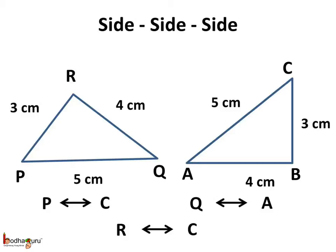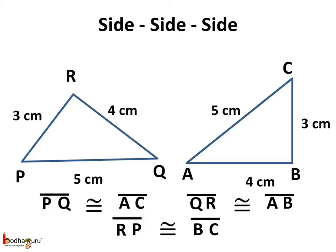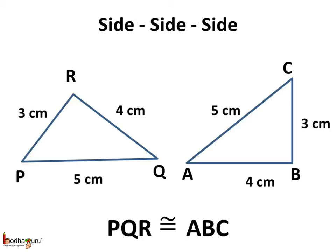Here, in the two triangles — triangle PQR and triangle ABC — P matches with C, Q matches with A, and R matches with C. So the line segment PQ is congruent to line segment AC, line segment QR is congruent to line segment AB, and line segment RP is congruent to line segment BC. And we say triangle PQR and triangle ABC are congruent.